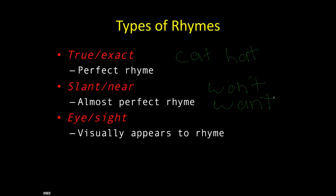We also have an eye or sight rhyme, which is something that visually appears to be a rhyme. For example, laughter and daughter. These words have the same letters in them, but when you actually say them out loud, they don't sound like a rhyme.